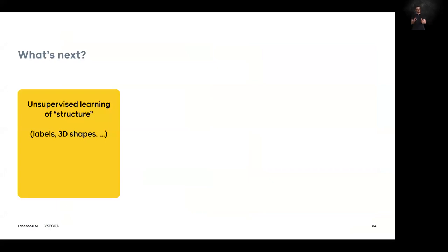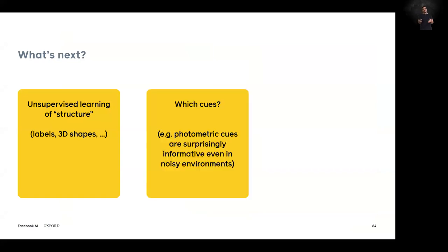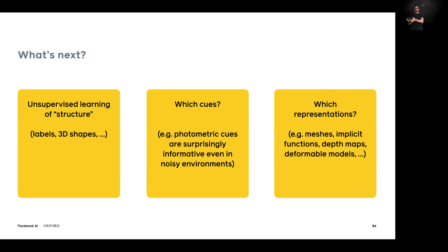Looking ahead, unsupervised learning will be a major topic in the coming years, with focus shifting from just learning features to learning structured, interpretable outputs like labels, shapes, and segmentations. Open questions include which cues to use — photometric reasoning proved surprisingly effective with noisy internet images despite typically being fragile — and which 3D representation is best. Options include meshes, implicit functions, depth maps, and deformable models; finding what works well both for geometry and for unsupervised learning remains an open challenge.